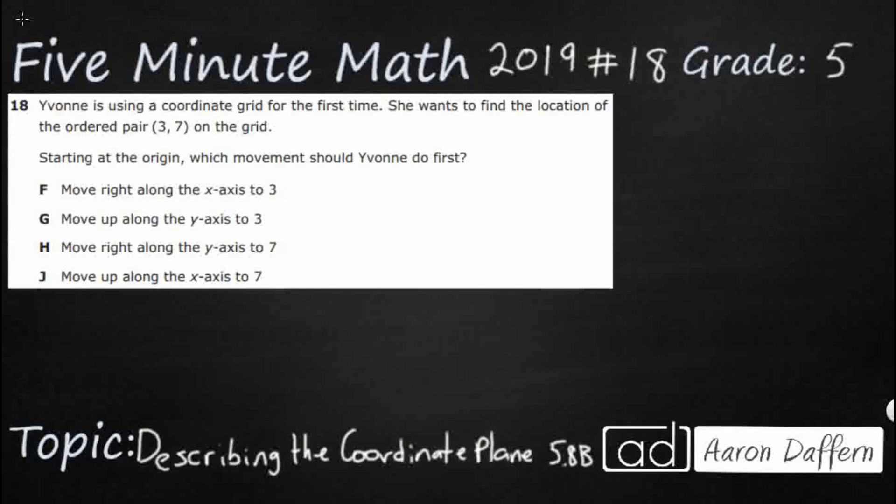So we have Yvonne and she is using a coordinate grid for the first time. She wants to find the location of the ordered pair (3,7). So starting at the origin, which movement should Yvonne do first?